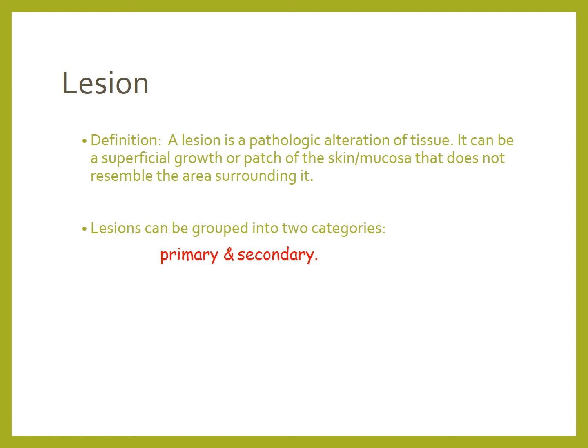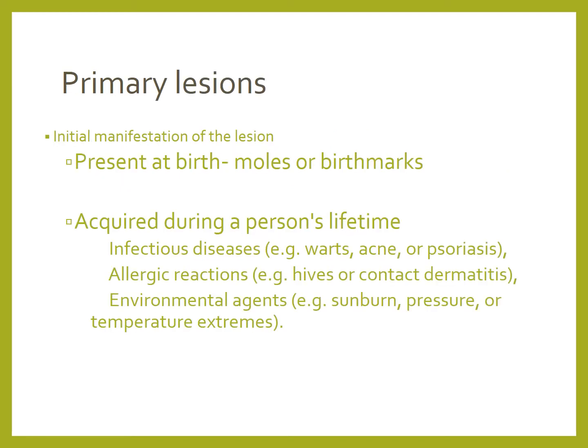A lesion is a pathological alteration of the tissue — a superficial growth or patch of skin or mucosa that does not resemble the area surrounding it. Lesions can be grouped into two categories: primary and secondary. Primary lesions are the initial manifestation, present at birth like birthmarks or moles, or acquired during a person's lifetime — for example, infectious diseases like warts, acne, psoriasis, allergic reactions like hives or contact dermatitis, or environmental agents like sunburn, pressure or temperature extremes.